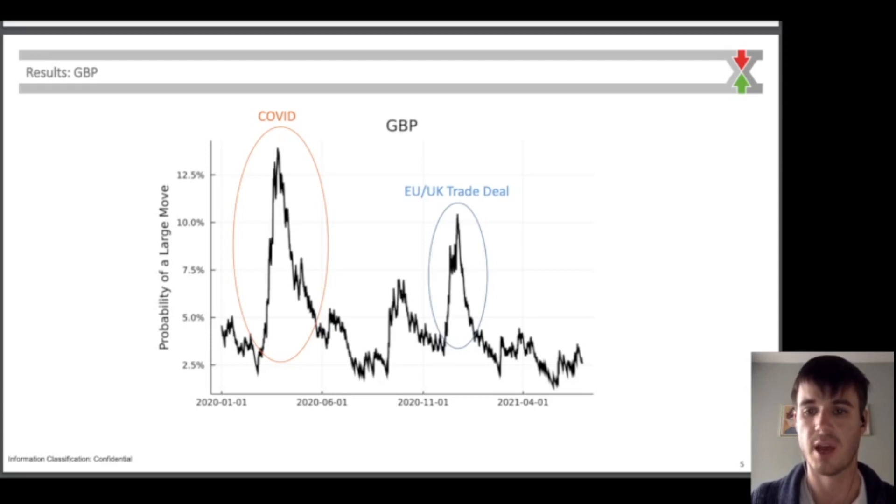This probability has since fallen off and is now hovering around 2.5%. This gives a good indication of how these probabilities can change over time and indicates that the model is able to describe what was actually happening in the FX markets on a given day.